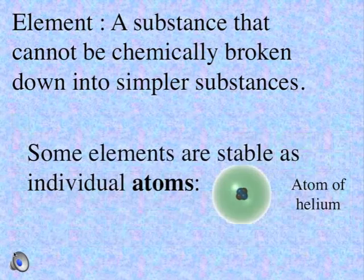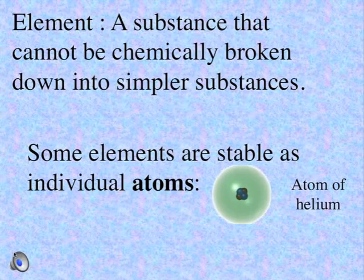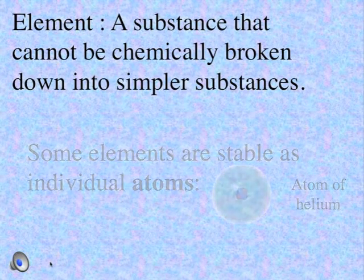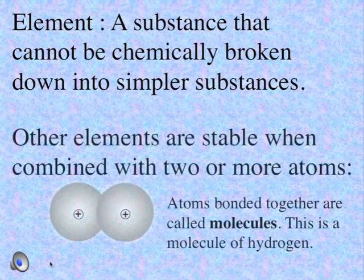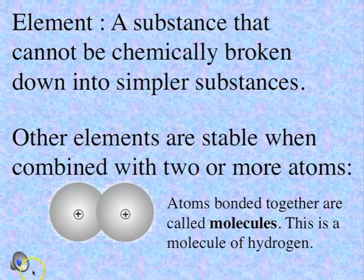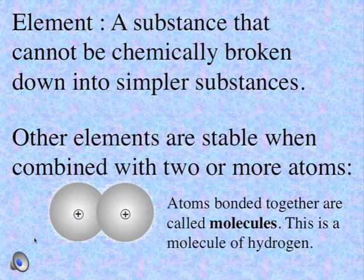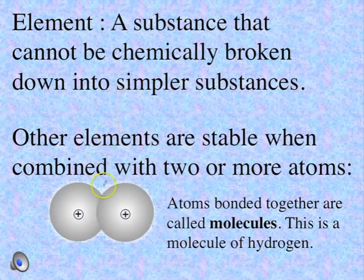Some elements are stable as individual atoms, like helium, or argon, or krypton. Other elements are stable only when they're combined with two or more atoms. So atoms bonded together this way form molecules. There's a molecule of hydrogen, H2. In order to be stable, you need two atoms of hydrogen bonded together.